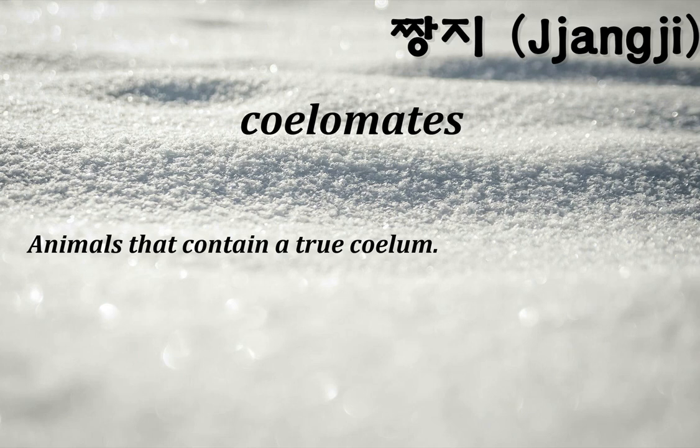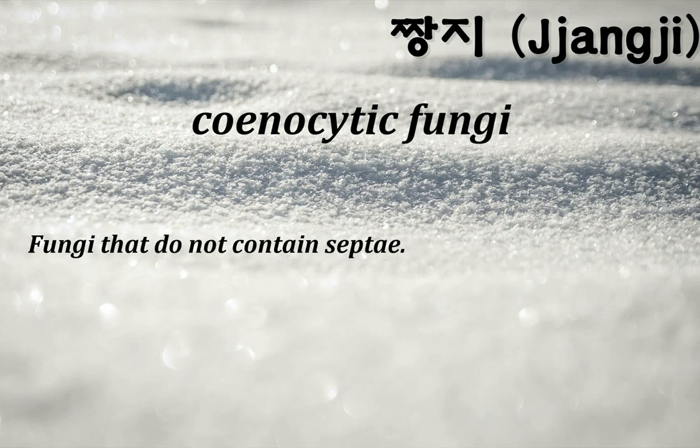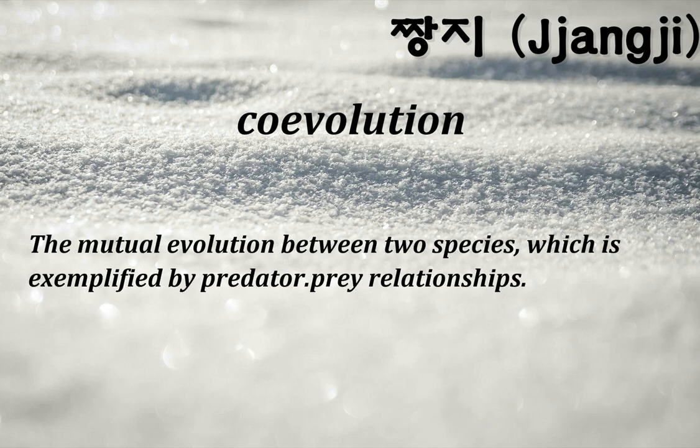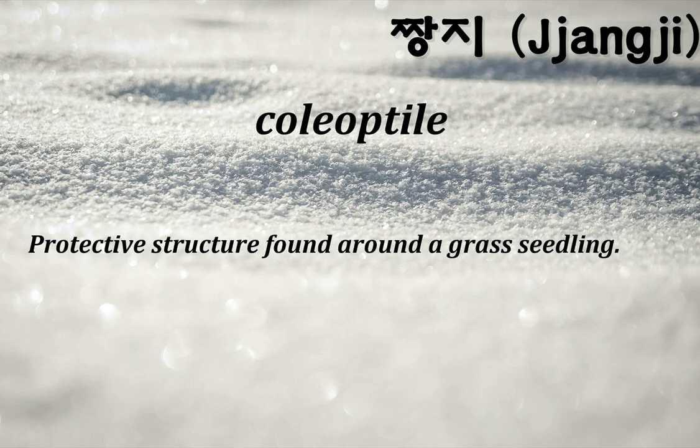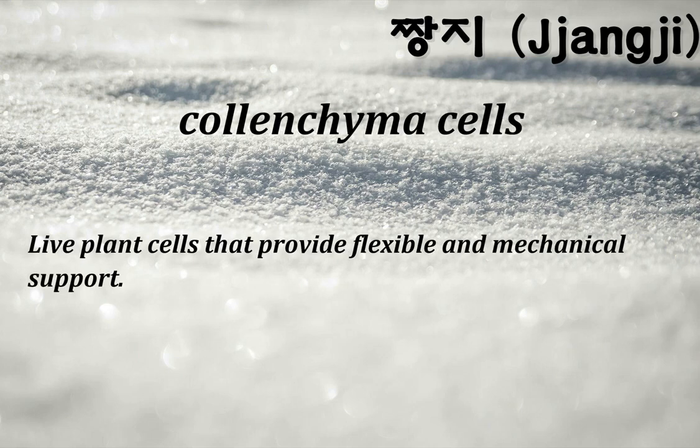Coelomates: animals that contain a true coelom. Coenocytic fungi: fungi that do not contain septae. Coevolution: the mutual evolution between two species, exemplified by predator-prey relationships. Coleoptile: a protective structure found around a grass seedling. Collenchyma cells: live plant cells that provide flexible and mechanical support.